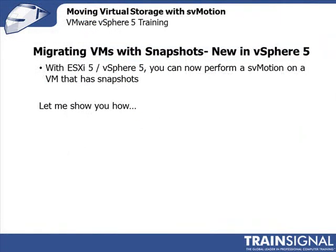That topic is migrating virtual machines with snapshots. Brand new in vSphere 5, you can actually perform a storage vMotion on a virtual machine that has snapshots. This is really useful because it's very common to be using snapshots on virtual machines. Previously, if you had snapshots and needed to migrate the virtual machine disk file to another datastore, you couldn't do it and would have to figure out whether to delete those snapshots. Now you can just do an SVMotion and the snapshots come along with it. Let me go over to my vSphere 4 server first to show you what it looked like previously.